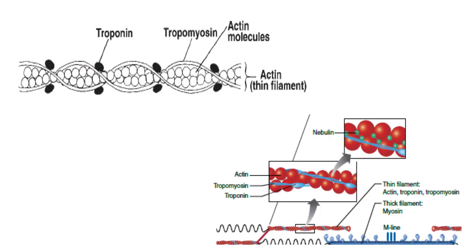Thin filament is the actin filament. Individual actin molecules are spherical or globular proteins. These molecules join to form an actin filament like pearls in a necklace. It has two more proteins that help in muscle contraction: tropomyosin and troponin. Tropomyosin is a tube-shaped protein twisted around actin. Troponin is a round-shaped protein attached at intervals to actin and tropomyosin. Troponin and tropomyosin, along with calcium, start a muscle's contraction and relax it. We will discuss it in the next video.